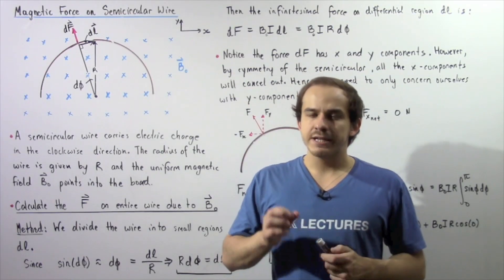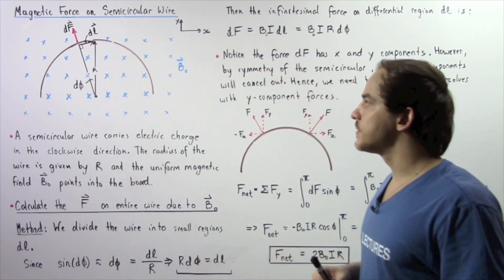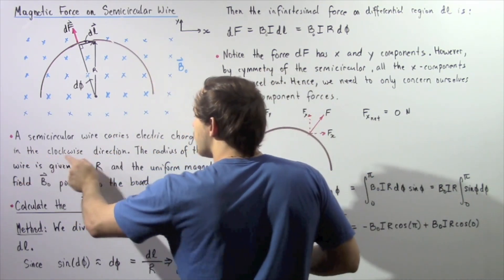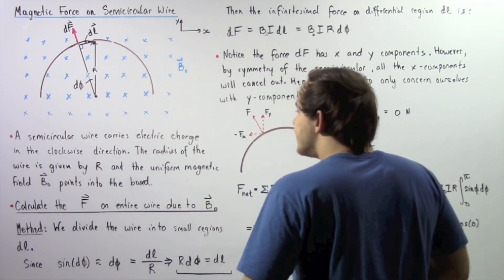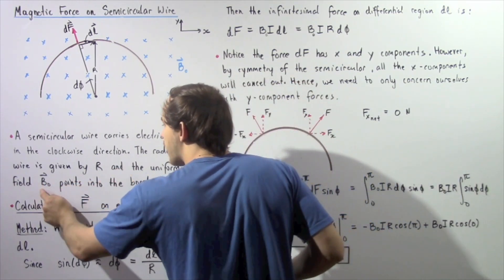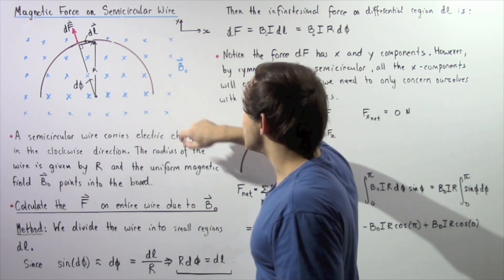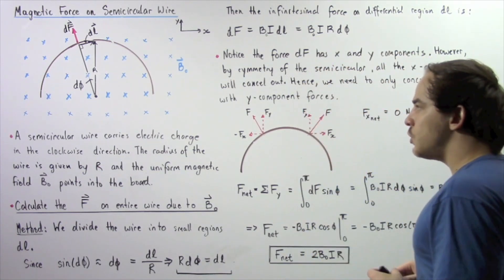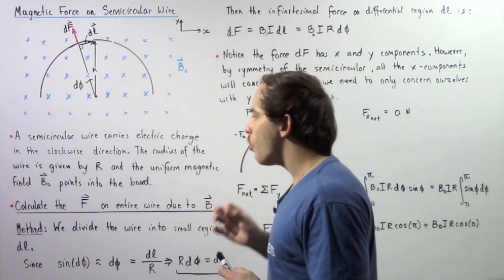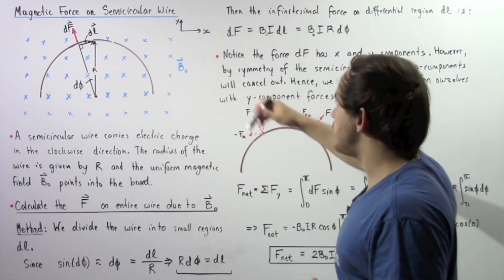Let's continue our discussion on magnetic forces that act on currents inside a wire as a result of magnetic fields. Suppose we have a semicircular wire that carries an electric current in the clockwise direction. The radius of this wire is uppercase R, and the uniform magnetic field B0 in which the wire is found points into the board, depicted by the blue X's. Our goal is to calculate the net magnetic force acting on this entire semicircular wire.